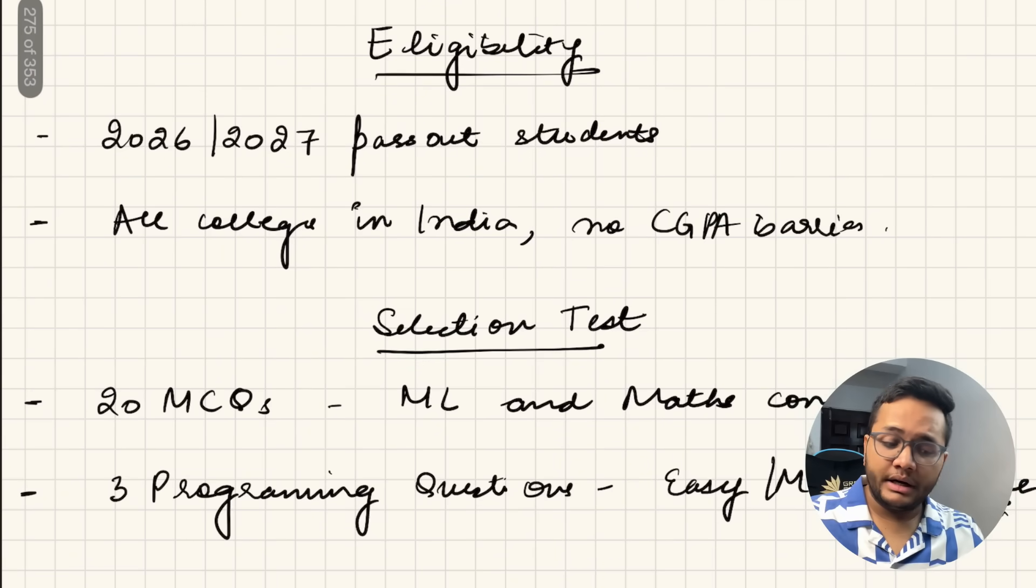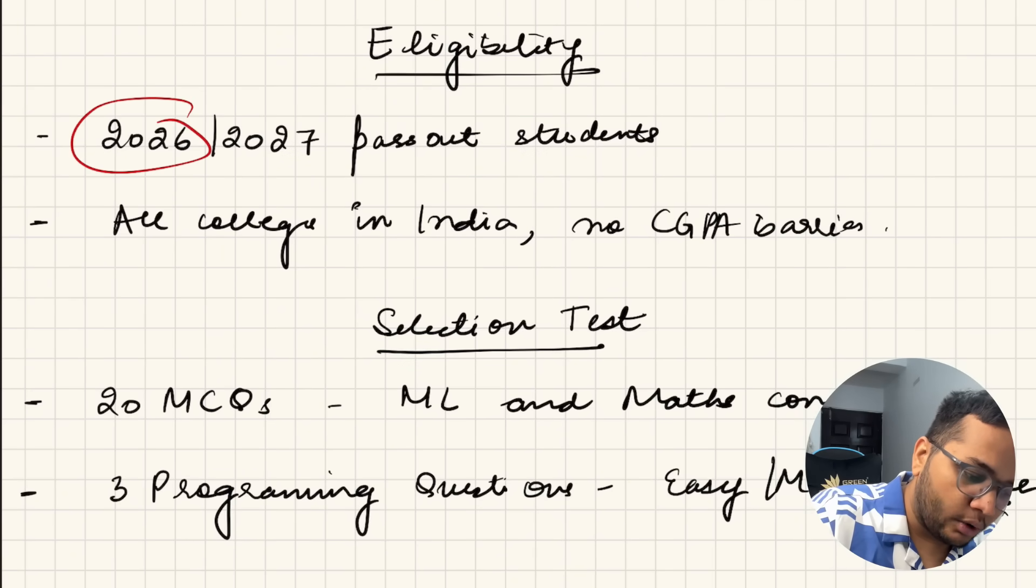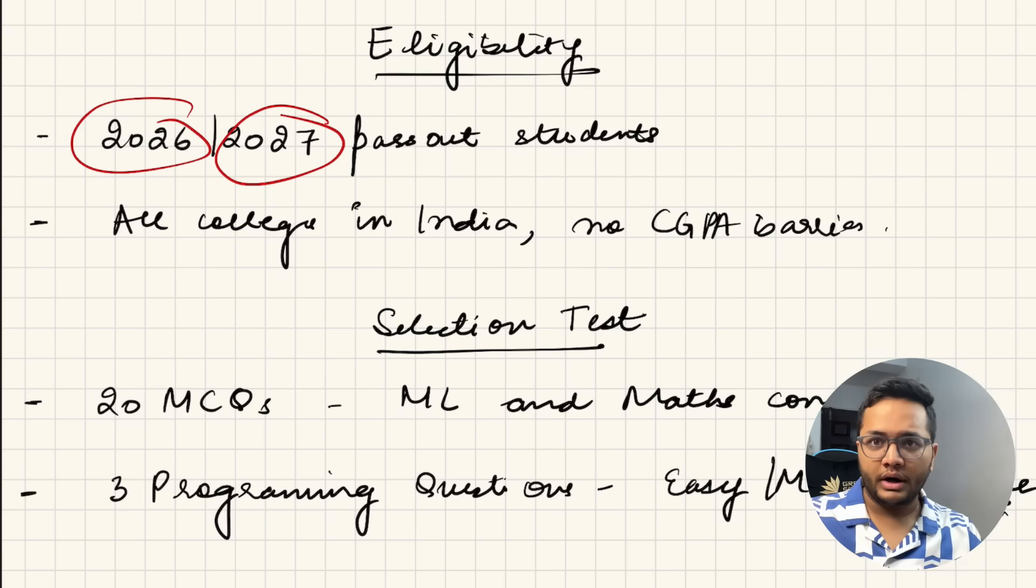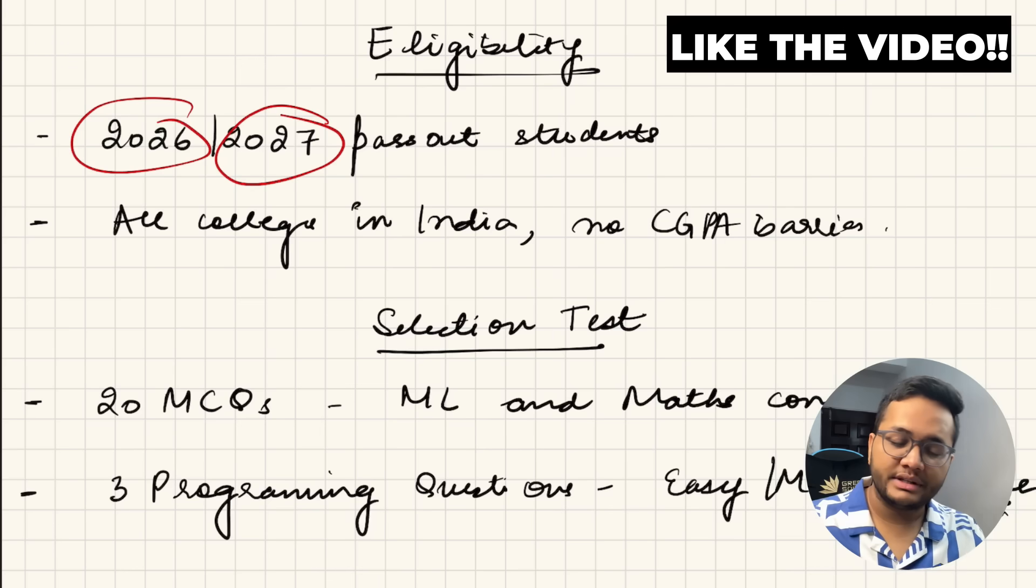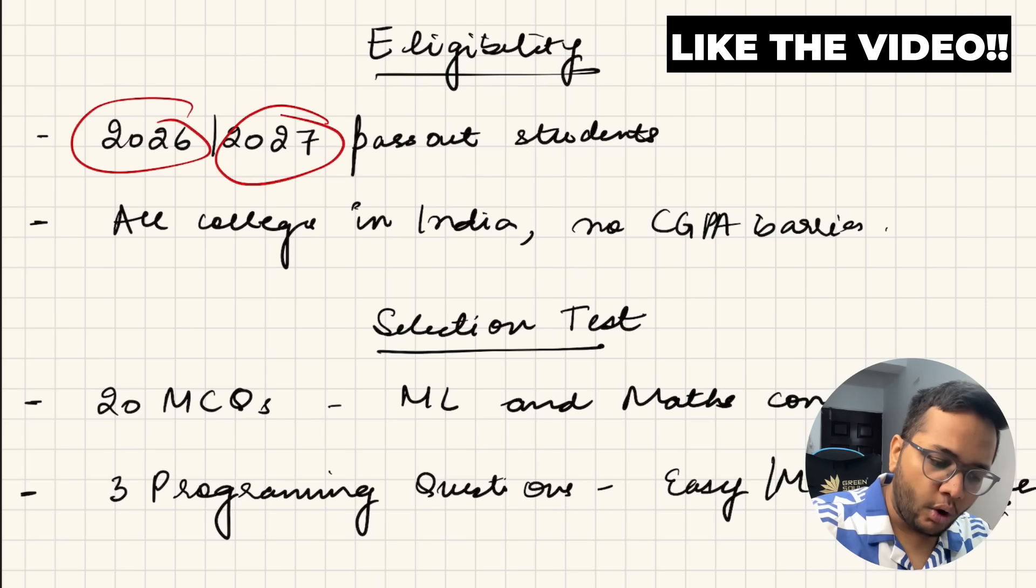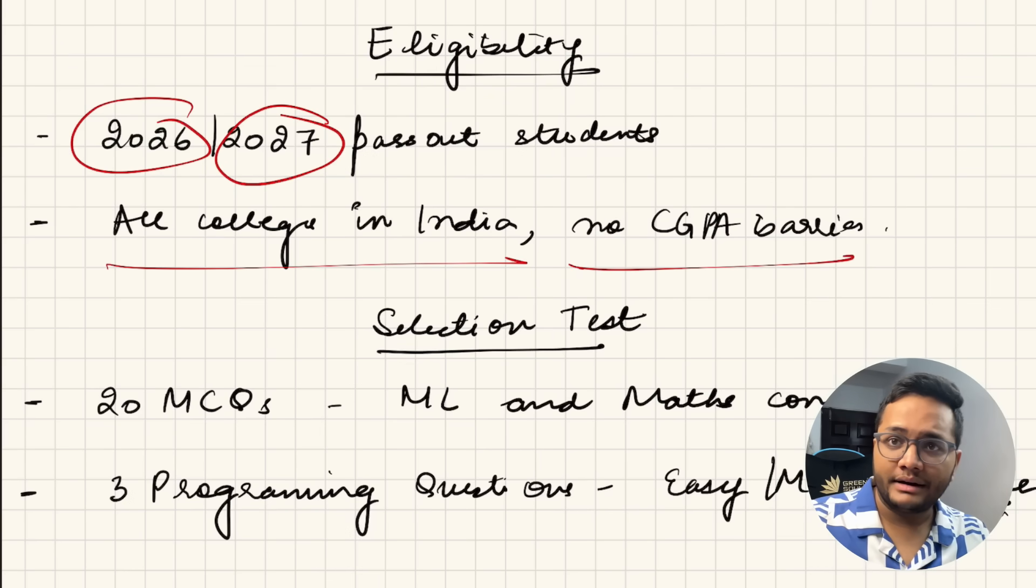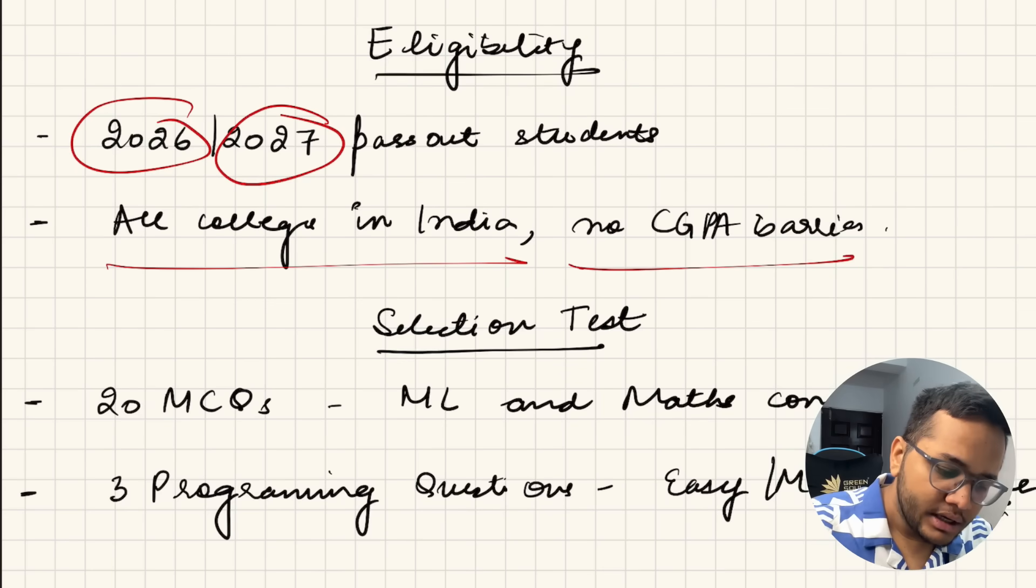Eligibility: Who is eligible? 2026 or 2027 passouts. If you're a final year student or you are a third year student, you are eligible. Whether you are in second year, you have just given your exam and now you have moved to your third year, you are eligible. 2026, 2027 passouts - you are eligible. All colleges in India, no CGPA barrier. So there's no CGPA barrier, any college within India, you are eligible.